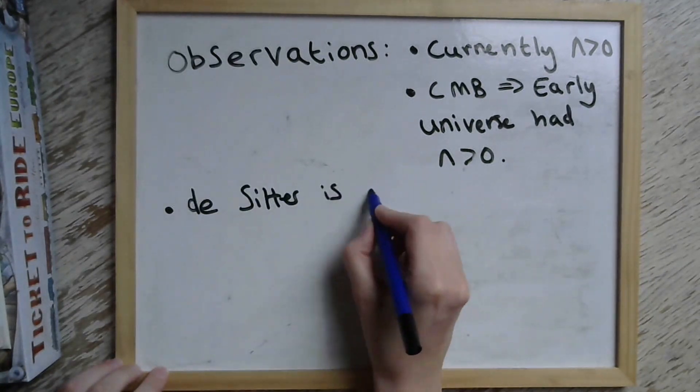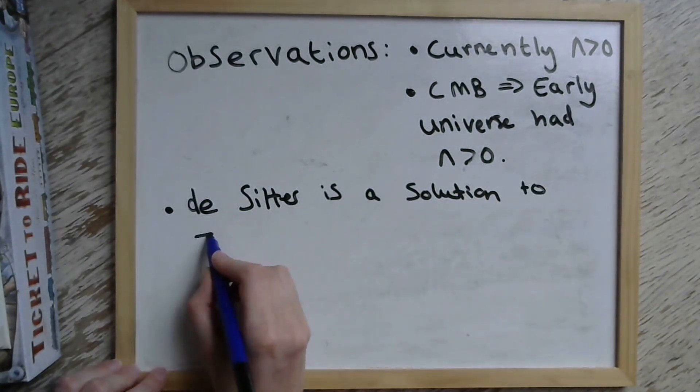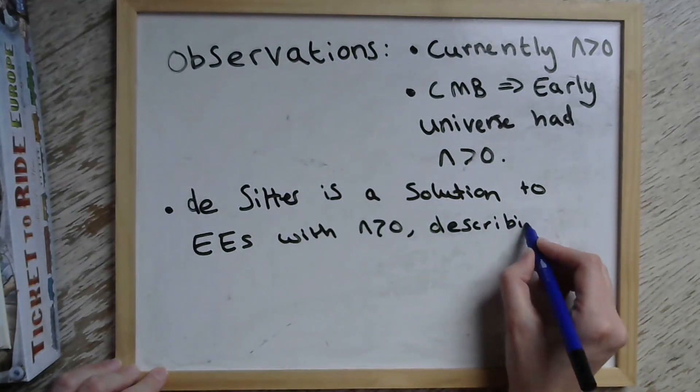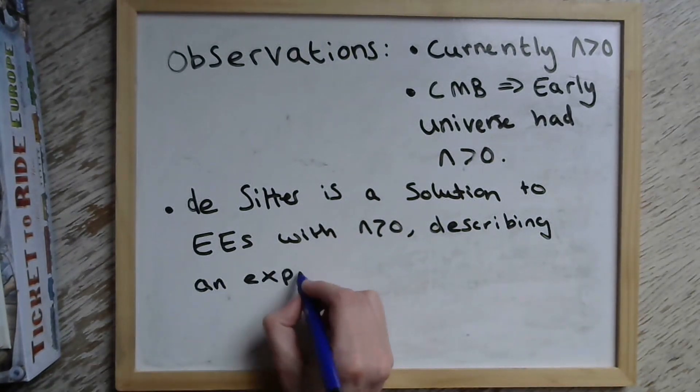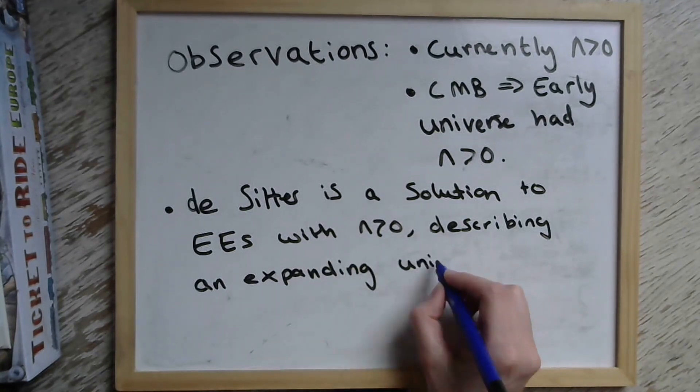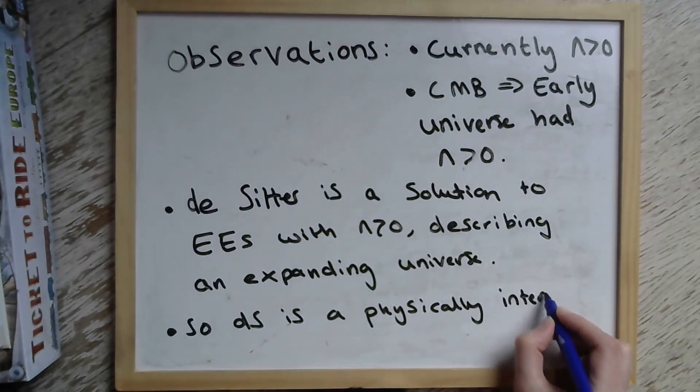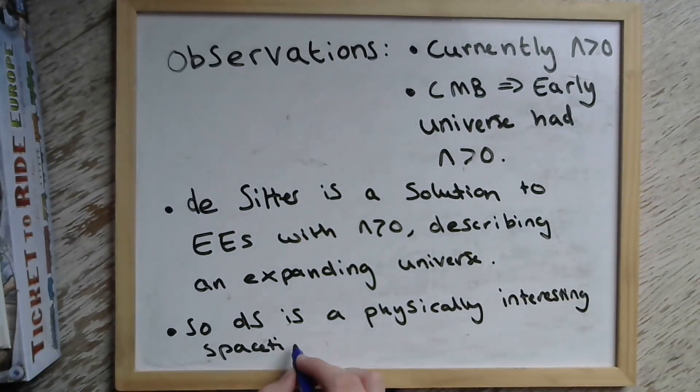So this tells us that the universe has had two periods of accelerated expansion in its history, with the first early period having a much faster expansion than the one we see today. And de Sitter is a solution to Einstein's equations that has such a positive cosmological constant and so describes an expanding universe. And therefore it's a very physically interesting spacetime to study as well as being very theoretically interesting because it allows us to ask questions about, for example, the nature of horizons that aren't necessarily those of black holes.